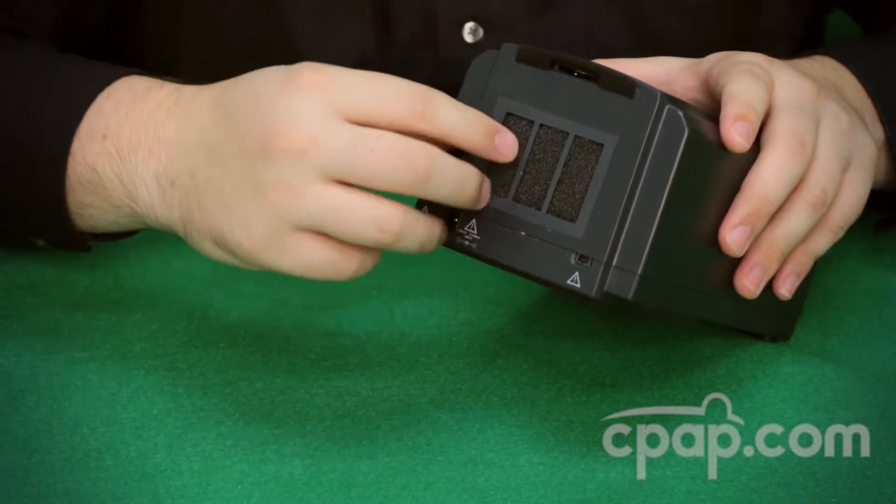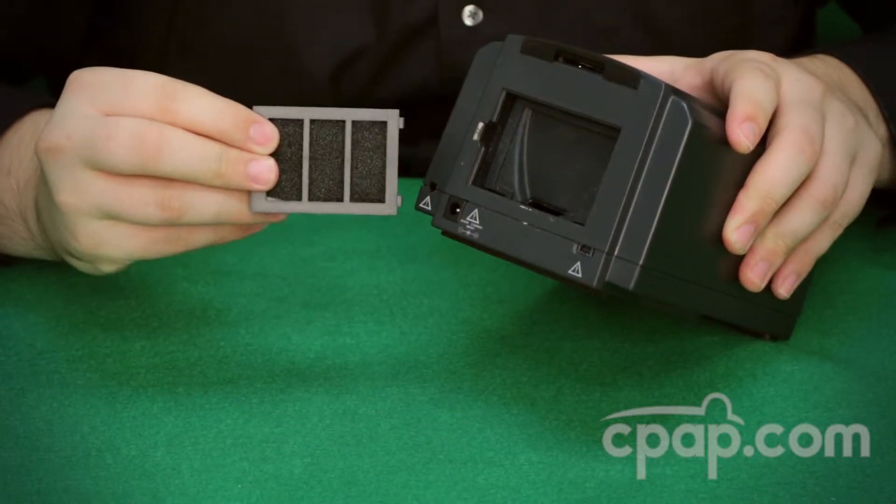With the filter end of the machine facing you, remove the cassette from the machine by lifting the tab on the left side of the cassette.